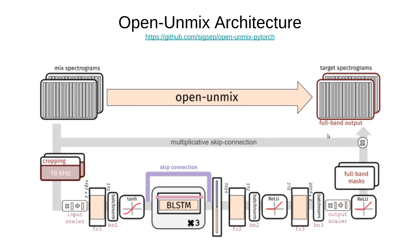All we have to do is multiply by the original mixture spectrogram to produce the targets. There is one step they didn't show here — they use what's called a Wiener filter. Essentially, given certain spectrogram components that are predicted, you can also use the mixture spectrogram to do expectation maximization to produce an even cleaner estimate of the target. So they are using a Wiener filter — I just felt like I should mention it even though they don't show it here.